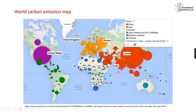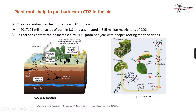But do we still have hope? How do we put the extra CO2 in the air back into the soil? The solution was just around us — the crop root system can help to reduce CO2 in the air. In 2017, 91 million acres of corn in US land already helped to assimilate and reduce 850 million metric tons of CO2 in the air through the photosynthesis process.